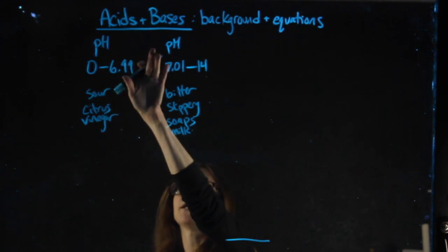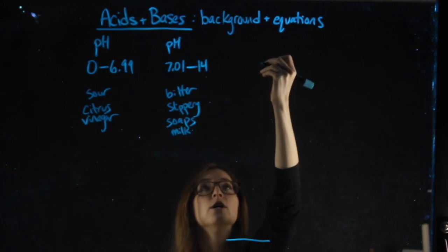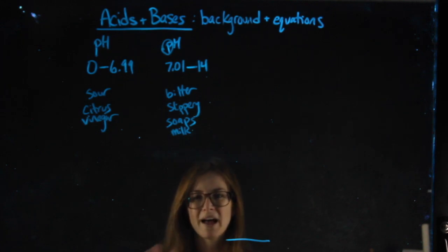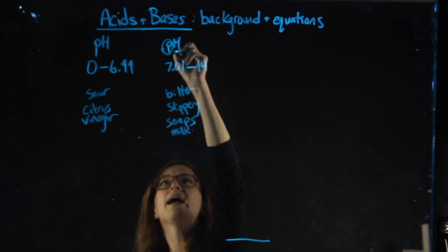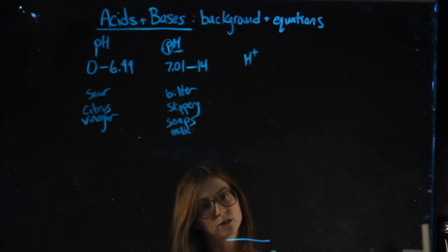pH is a measurement of how much hydrogen ions is in a solution. So the P just tells us what we're going to do mathematically, and the H tells us how much H plus hydrogen ions are in a solution.